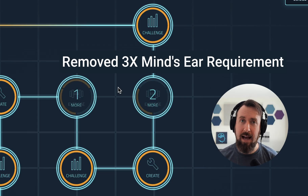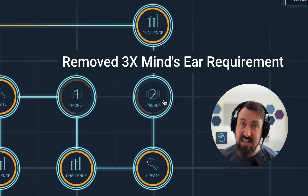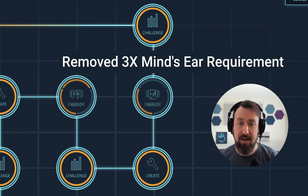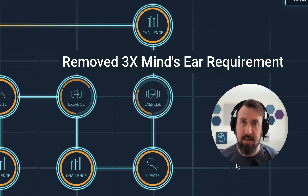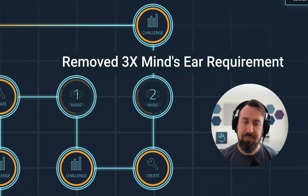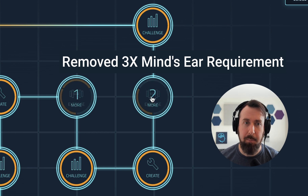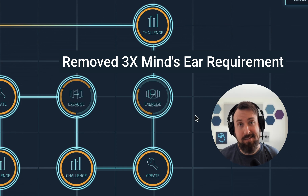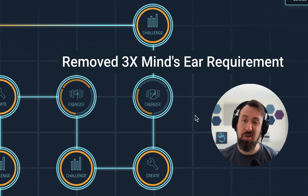First off, you no longer have to complete the Mind's Ear exercise lessons three times before you can move on to the section. Now they're just like regular lessons — you just complete them once and you can move on if you'd like, because some of you are getting frustrated doing those over and over again. However, we do still recommend it, so you'll see in the course map it's going to poke you: do it two more times, do it one more time. Ear training is all about practice, so we want you to do it three times, but you don't have to.